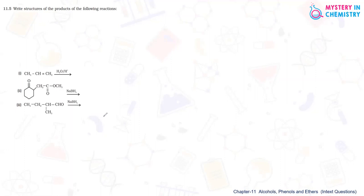Question number 11.5 is: write structures of the products of the following reactions. First, second, and third reactions are given with their reactants, and we have to write the product of each reaction. The first one is propene being hydrolyzed — that means propene is reacting with water in the presence of acid.